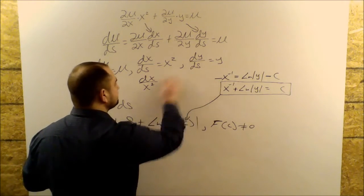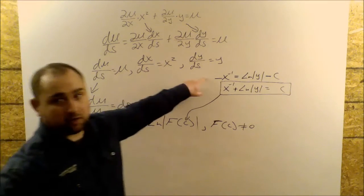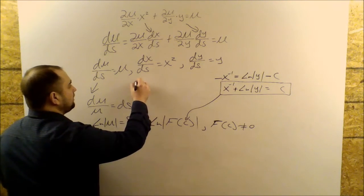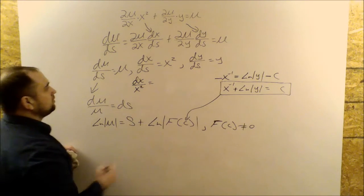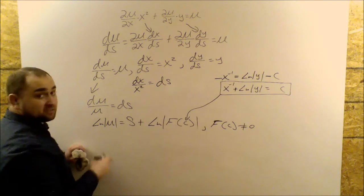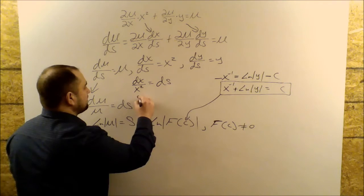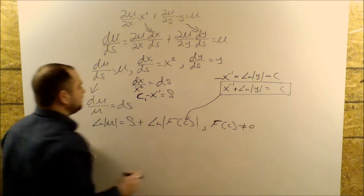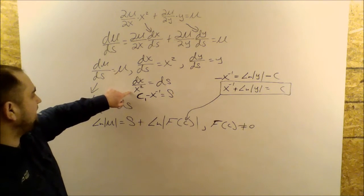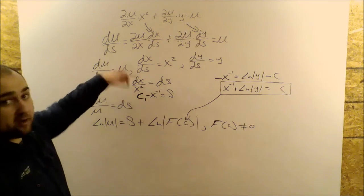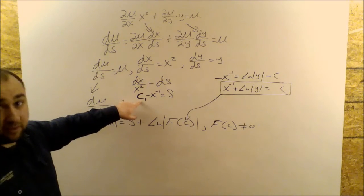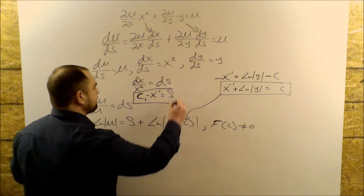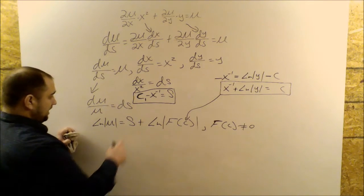Now let's figure out what s is. To find s I can use either one of these two equations. Using dx/x² = ds, that's the same as saying c₁ − x⁻¹ = s. If I integrate, I get x⁻¹ divided by −1, plus an integration constant, equal to s. So using these two equations I can replace s and c.